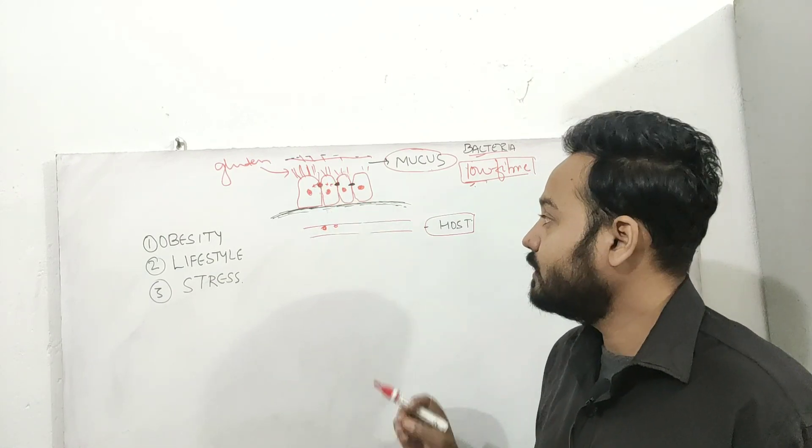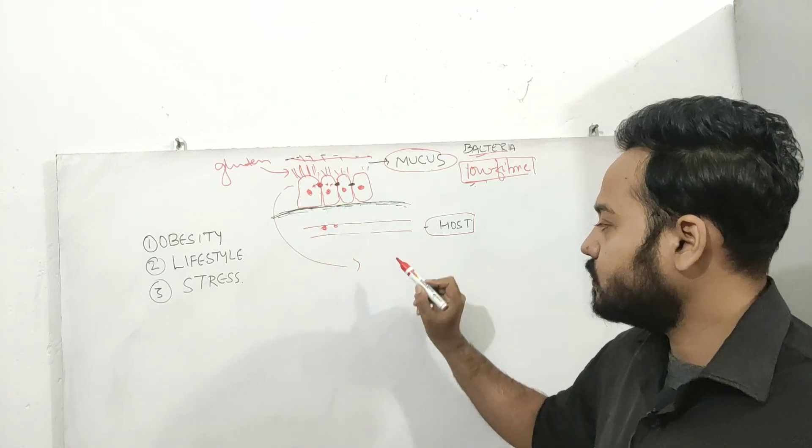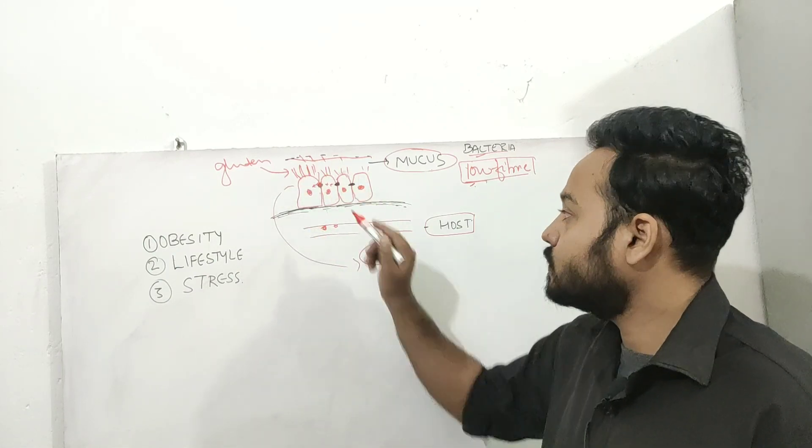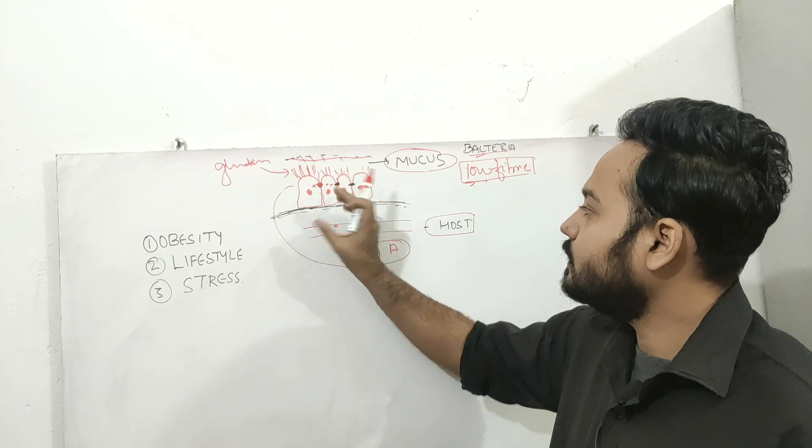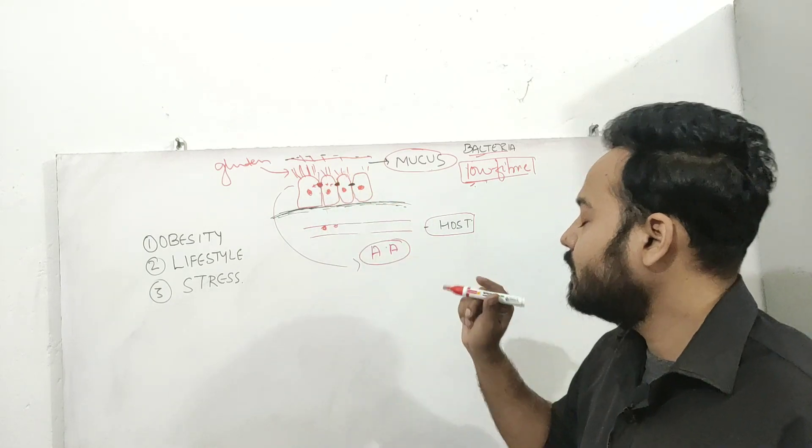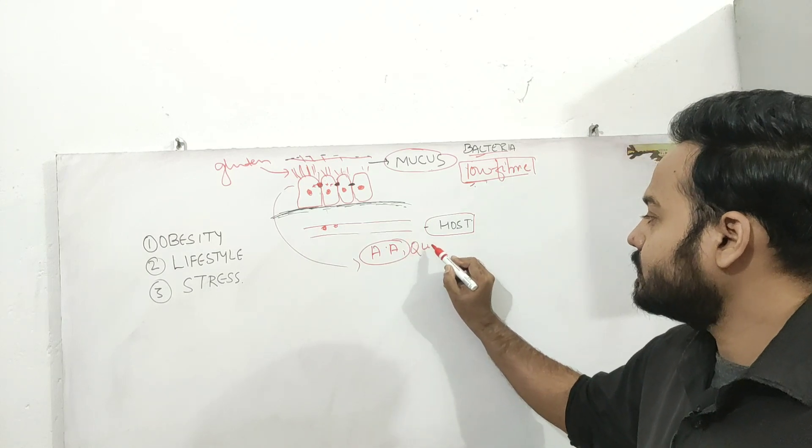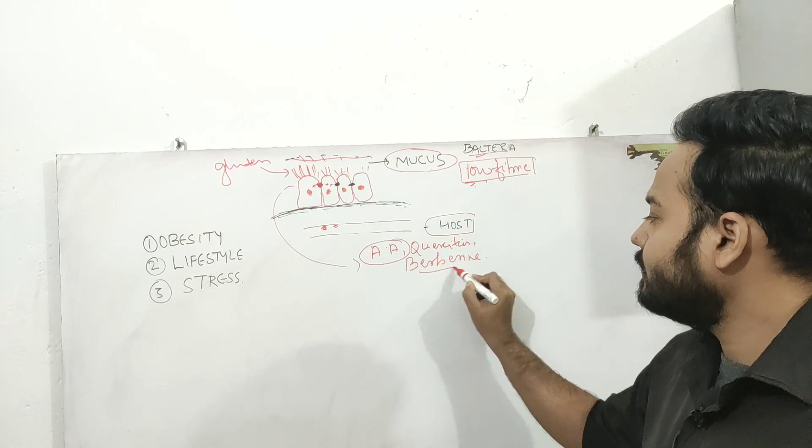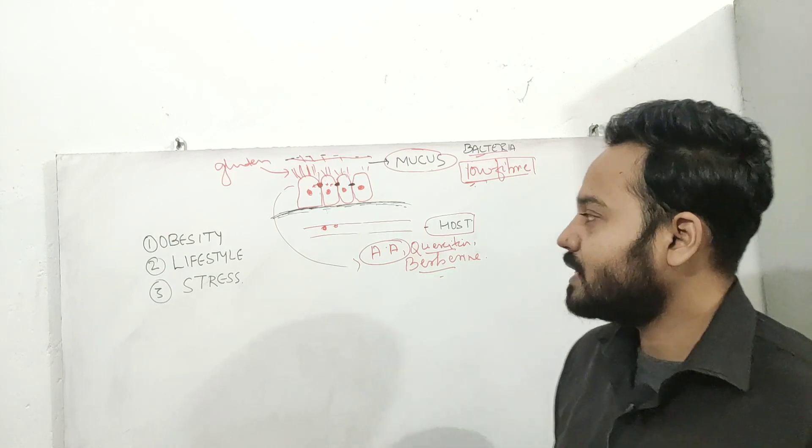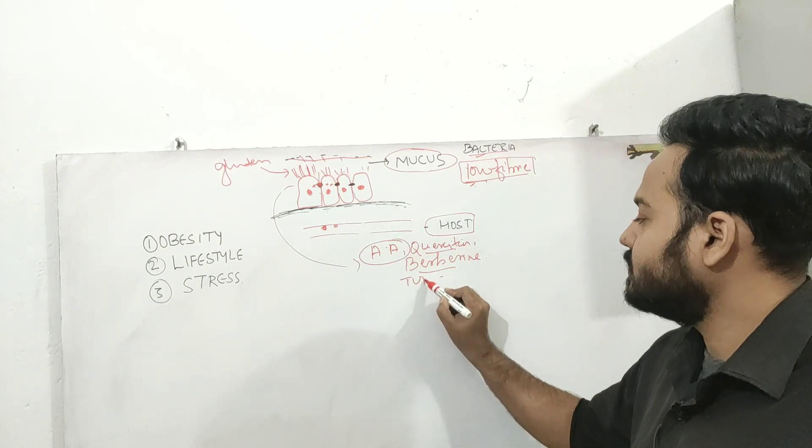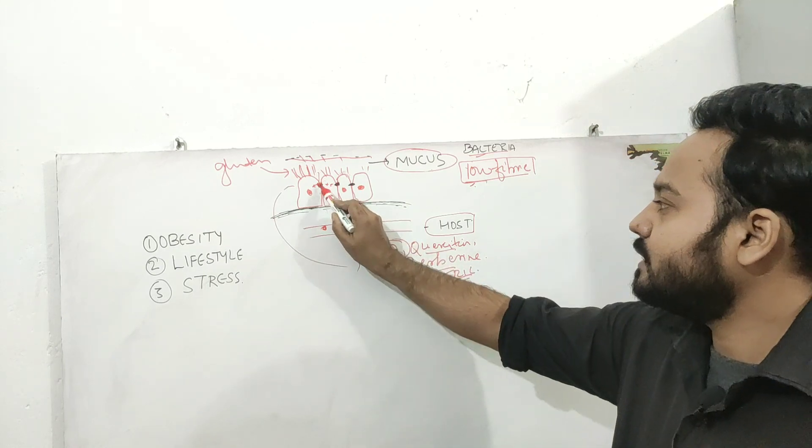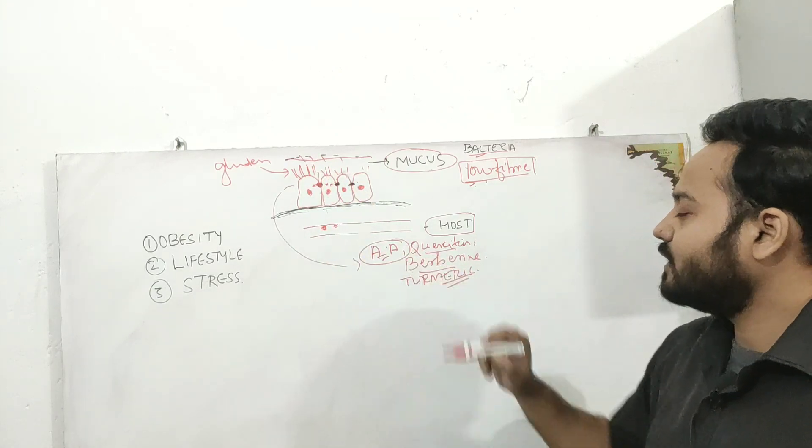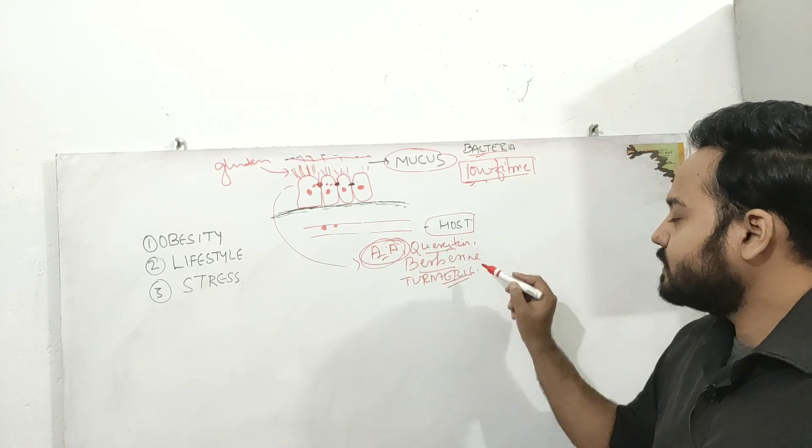Since they are transmembrane proteins, you have to eat foods which are rich sources of amino acids. Then flavonoids are very important. So it is seen that for tight junctions to adhere closely and prevent the leakage of toxins, you need certain flavonoids. Quercetin is very important. Then berberine. And eating foods which are anti-inflammatory, especially turmeric. So these foods will help in maintaining your tight junctions and preventing it from falling apart. Foods rich in amino acids, quercetin, berberine, turmeric.